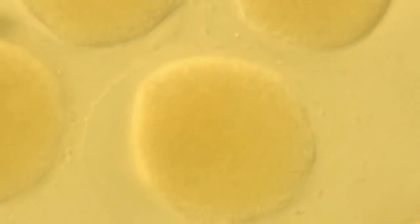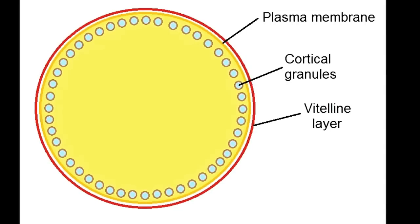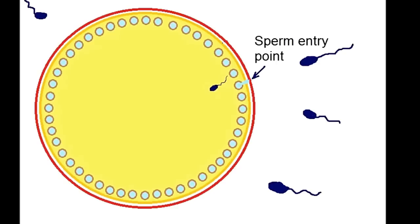Let's review again how the fertilization envelope is formed. There are cortical granules inside the egg and the vitelline layer just outside of the egg. The sperm entry causes the granule next to the place of entry to fuse to the plasma membrane and to release its content between the membrane and the vitelline layer.